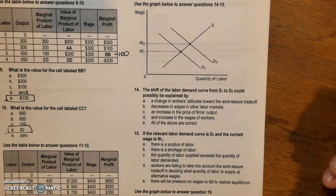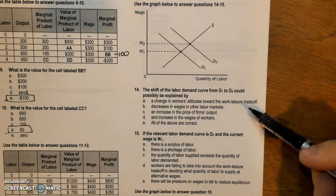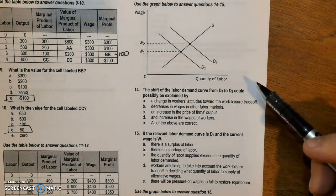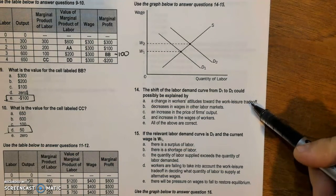And so the issue is that a change in the workers' attitudes toward the work leisure trade-off could affect this graph, but it would be a supply issue.